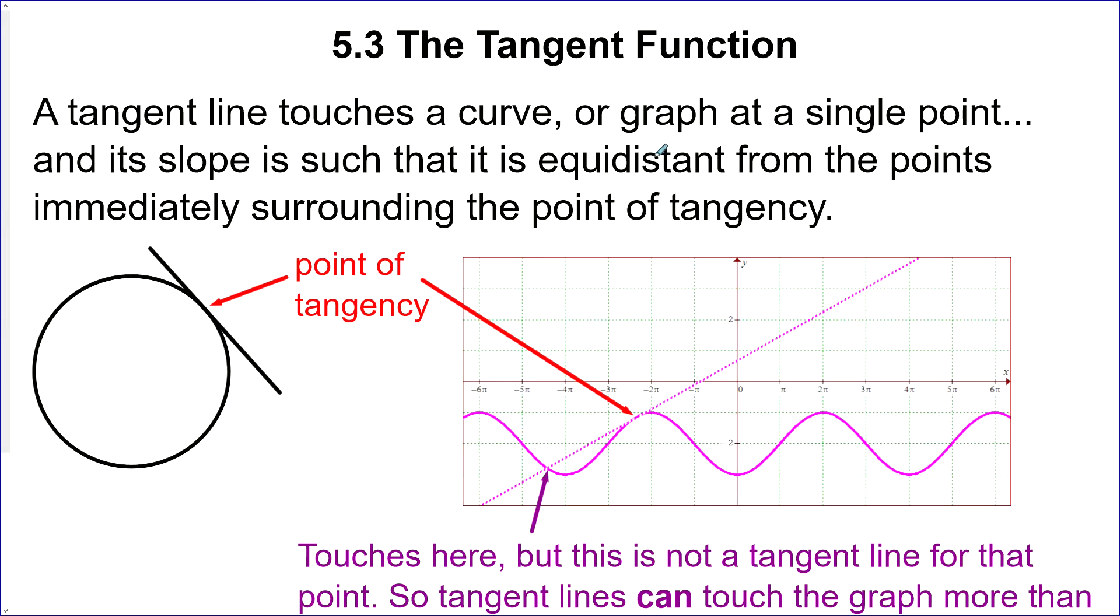Now there's a problem with this definition, as it is, because it can obviously hit the graph more than once and that's still a tangent line to the graph at that point. So I've added to it: its slope is such that it is equidistant from the points immediately surrounding the point of tangency.